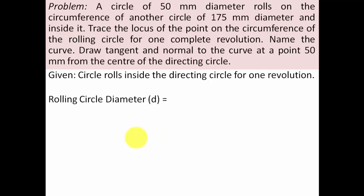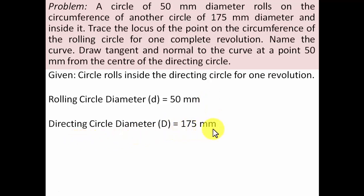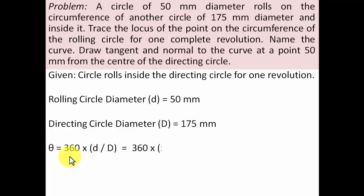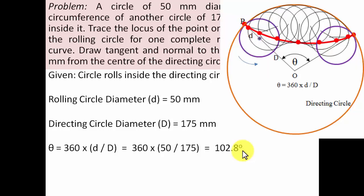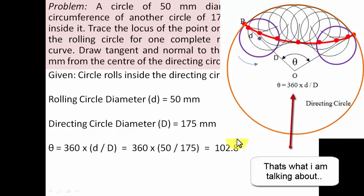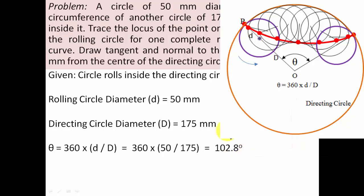Let's get the data. The rolling circle diameter is 50mm, so its radius is 25mm. The directing circle diameter is 175mm, and hence its radius capital R is 87.5mm. Theta equals 360 multiplied by d over D — putting in all these values gives 102.8 degrees. This is the angle subtended at the center of the directing circle when the rolling circle completes one revolution.